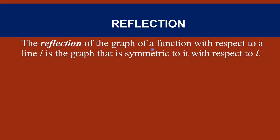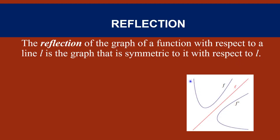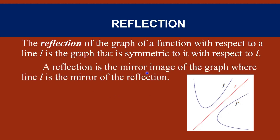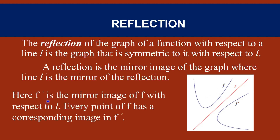First we are going to see about reflection. The reflection of the graph of a function with respect to line l is the graph that is symmetric to it with respect to l. See this diagram — this is line l, f is the graph, and f-dash is the reflection of the graph. f-dash is symmetric to this line. A reflection is the mirror image of the graph where line l is the mirror of the reflection.